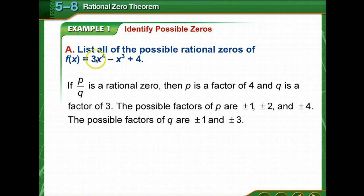Let's look at all the possible factors of 3, which is our q. That would be a plus or minus 1 and a plus or minus 3, because 1 times 3 are the only factors of 3.